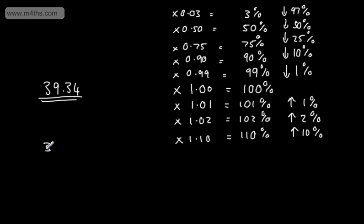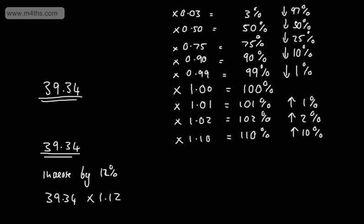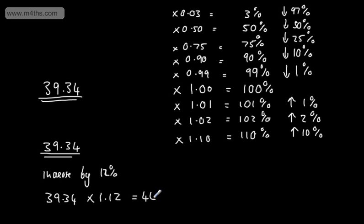Let's look at this in action. Take 39.34 and increase it by 12%. We simply multiply 39.34 by 1.12. Putting that into a calculator: 39.34 multiplied by 1.12 gives us 44.1 to 1 decimal place.